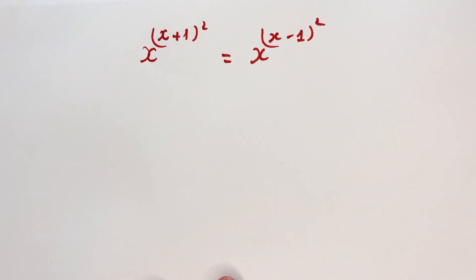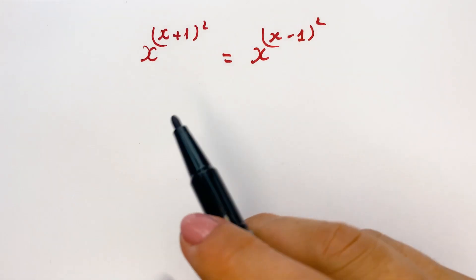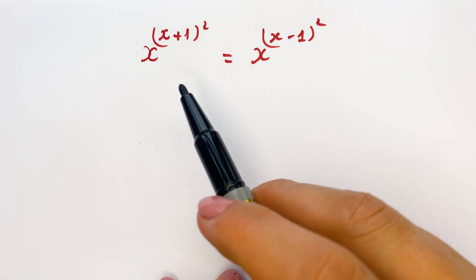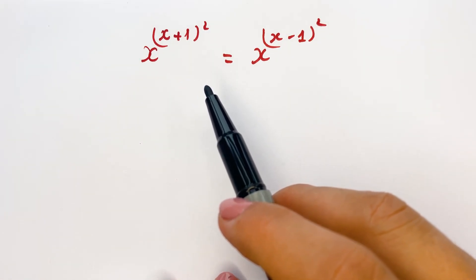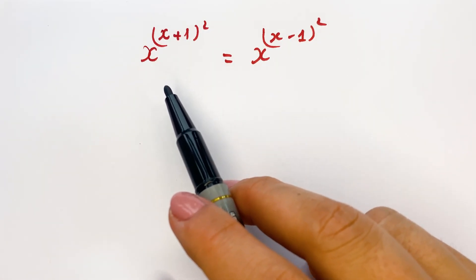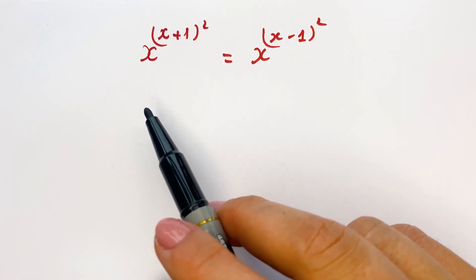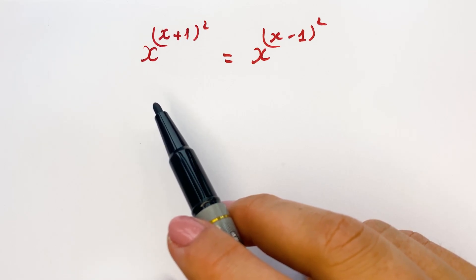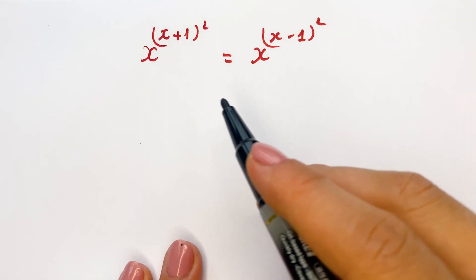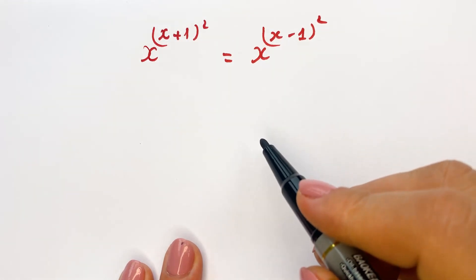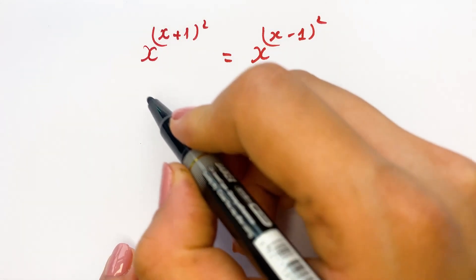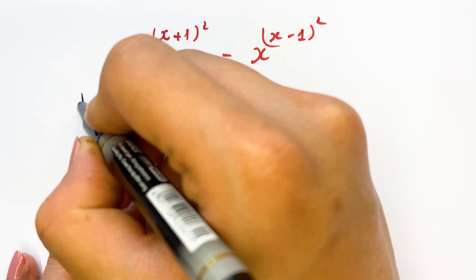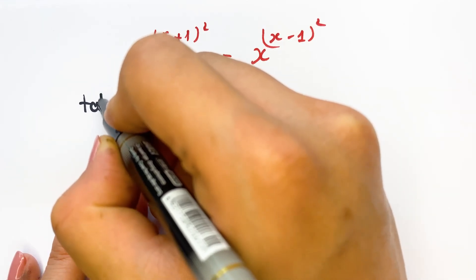Hello everyone. How to find the value of x in the exponential equation here. For the first step, you need to take logarithm on both sides.